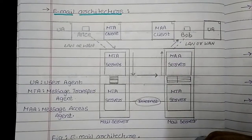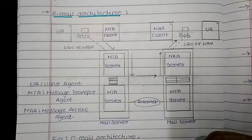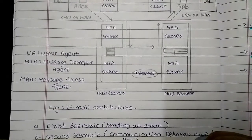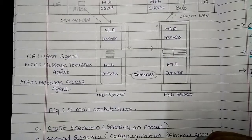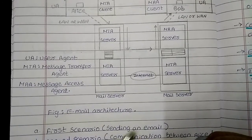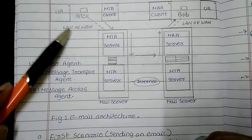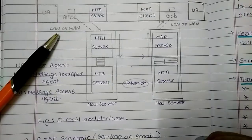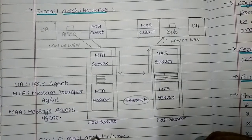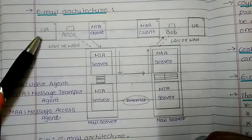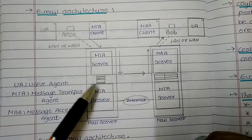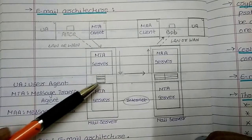The email architecture can have four scenarios in which the entire mail transfer happens. The first scenario is sending email — the mail is sent from Alice to Bob, which is a store-and-retrieve activity, needing two user agents for both sender and receiver. The second scenario is the main communication between Alice and Bob, which needs two user agents and a pair of MTAs.